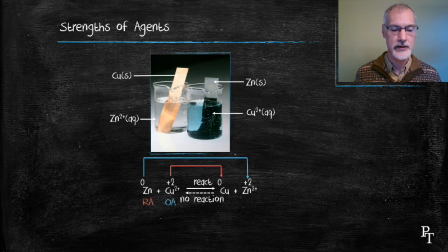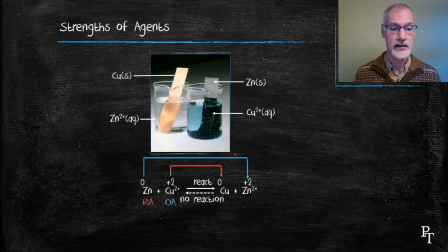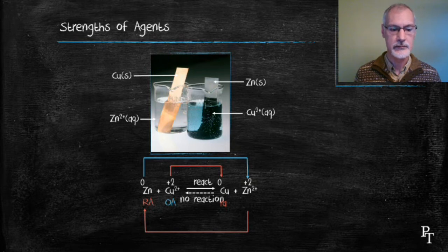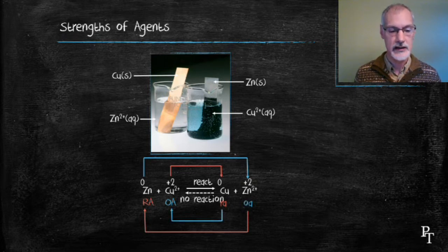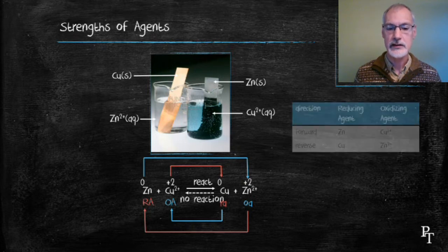Now let's look at the reaction in reverse. The zinc ion essentially gains two electrons, so it has been reduced, and the reducing agent is the copper metal. Similarly, the copper has been oxidized because it's lost two electrons, and the cause would be the zinc ions. So we have oxidizing agents in both the forward and reverse directions, as well as reducing agents.